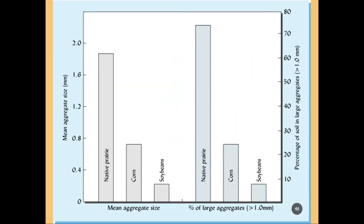Looking at mean aggregate size and percent of large aggregates, this is an example of the effects of agriculture on soil aggregation. Native prairie has much larger aggregate size, while the corn field shows less than half the average aggregate size of the soybean field, with a much lower percent of large aggregates.